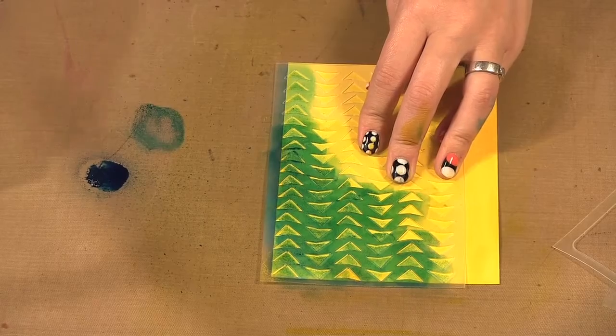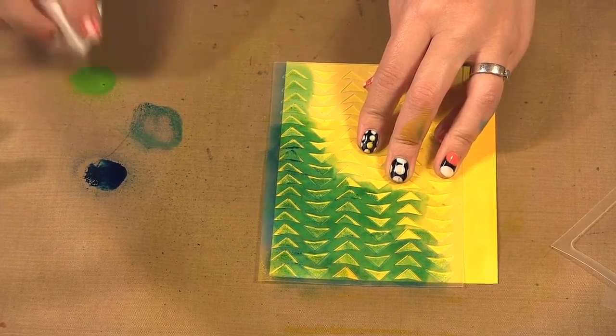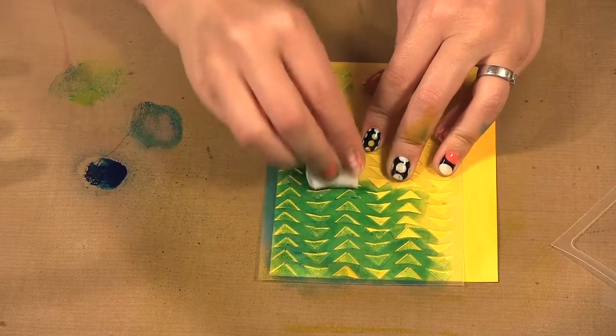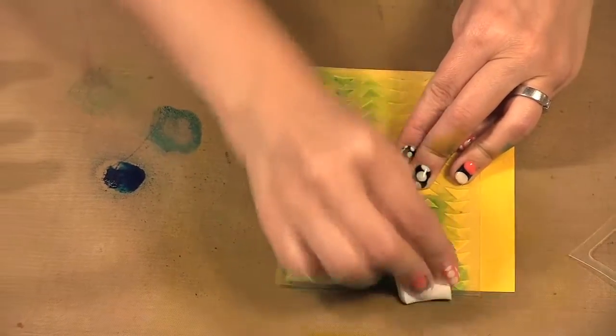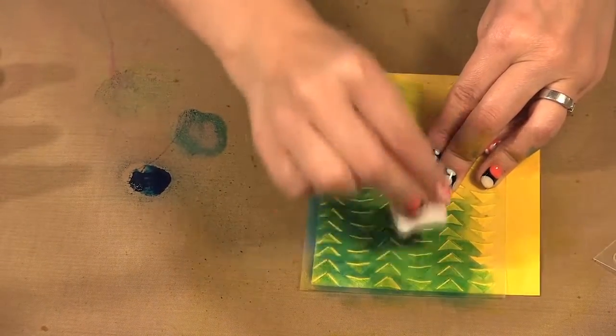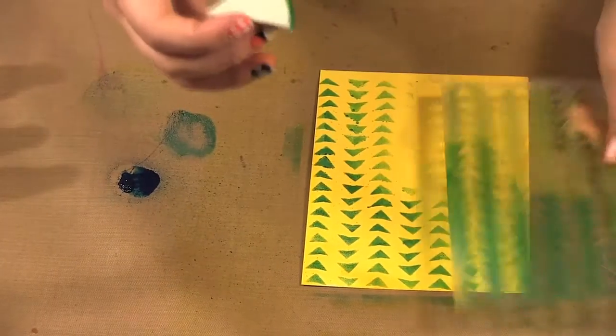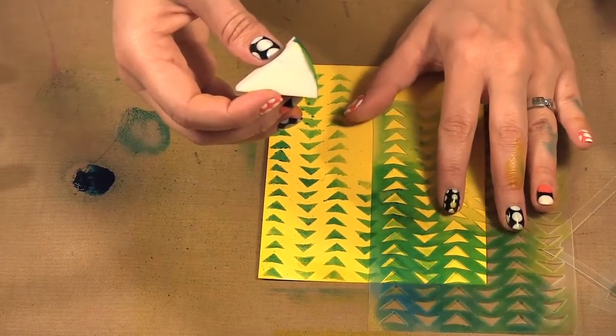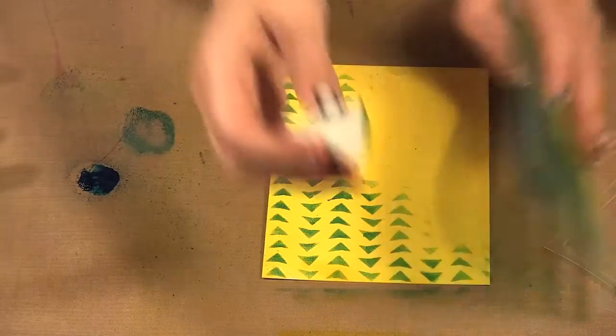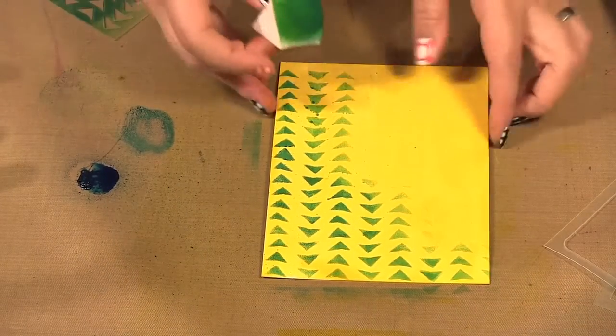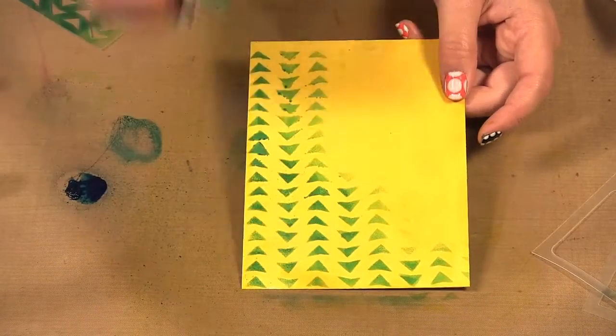And you can of course blend colors. I can put some green down, put a bit more over here. So you can see by applying it with a little makeup sponge I'm able to have control over how much and where it goes.